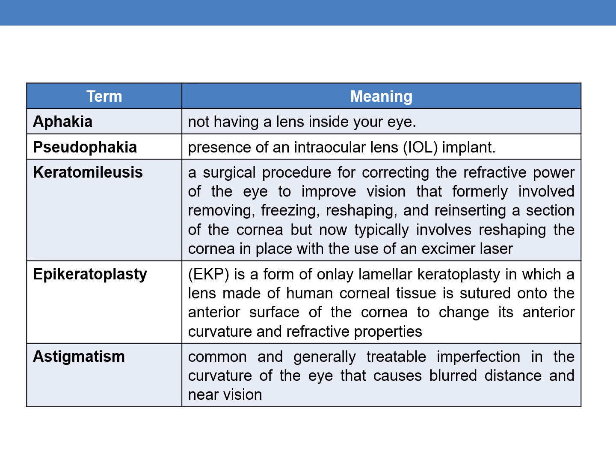The next term is epikeratoplasty. EKP is a form of onlay lamellar keratoplasty in which a lens made of human corneal tissue is sutured onto the anterior surface of the cornea to change its anterior curvature and refractive properties.